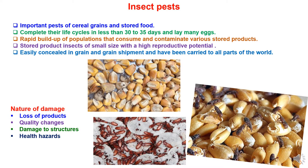As far as stored grain pests are concerned, insects have prime importance as they are responsible for major losses. Insects are important pests of cereals, grains, and stored fruits. Under optimum conditions, many species can complete their life cycles in less than 30 to 35 days and lay many eggs, resulting in rapid build-up and multiplication of populations that consume and contaminate various stored products. Stored product insects are in most cases small in size with high productive potential, so they are easily concealed in grain and grain shipments.